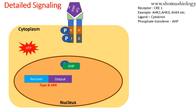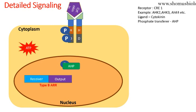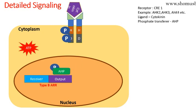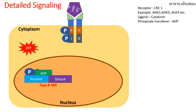Once phosphorylated, AHP is active. It acts as a transcription factor, goes inside the nucleus, and there we find Type B ARR — Arabidopsis Response Regulators. There are two types: Type B and Type A. Type A is more dominant over Type B, but first the phosphorylated AHP activates Type B ARR. Type B ARR also has a receiver and output region; AHP binds to and phosphorylates the receiver of Type B ARR, activating its output.